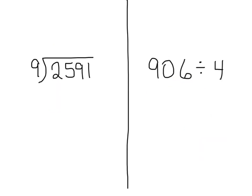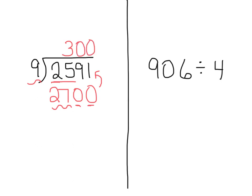Now on the left I have 2,591 divided by 9. Does 9 divide into 2? No. Does 9 divide into 25? Yes. So I need to think of a number close to 25 that 9 divides into evenly. 27. I'm going to change this to 2,700, because that's pretty close to my original number. Now I can use mental math: 27 divided by 9 is 3, and then I add the two zeros. My estimate is 300.